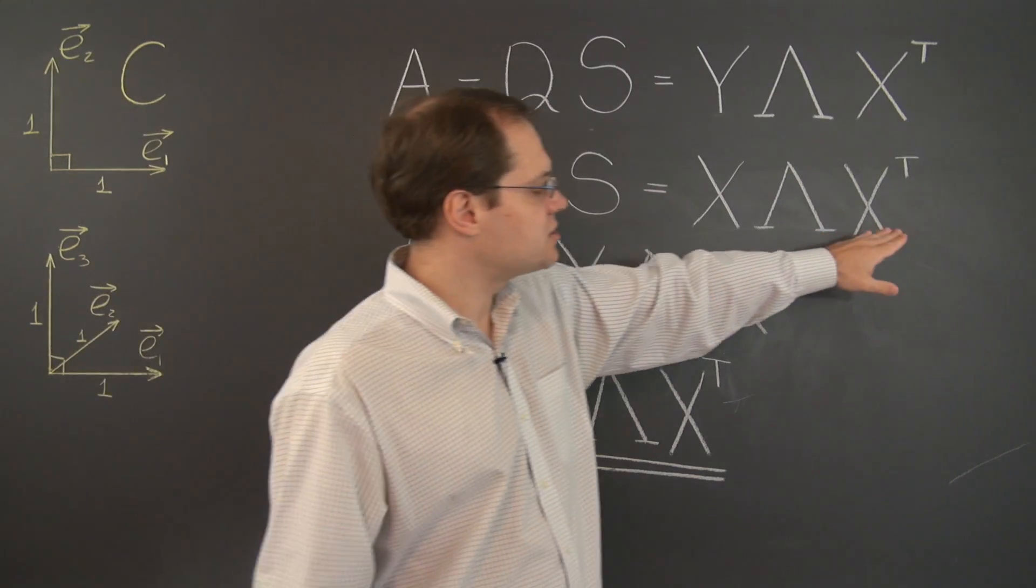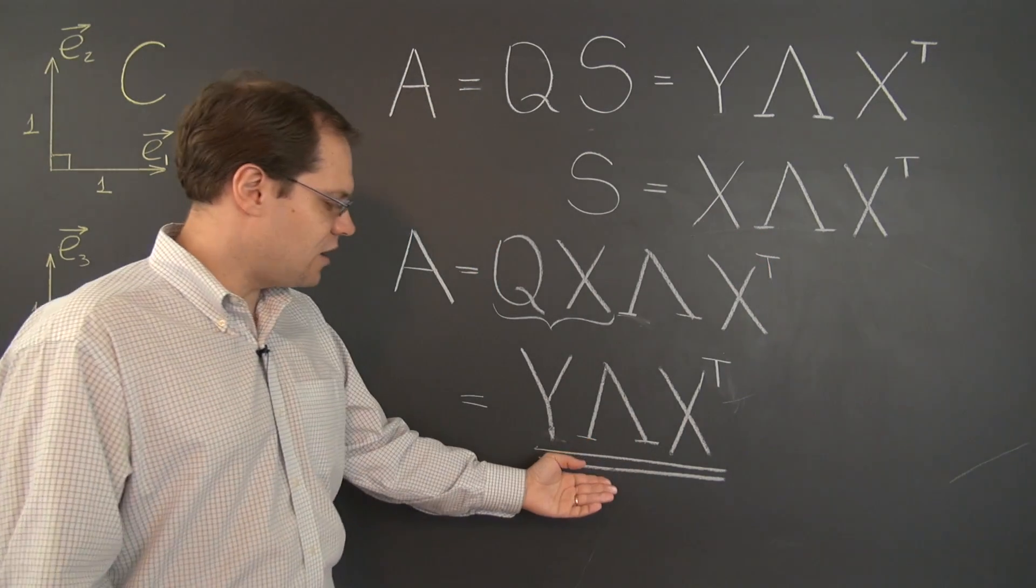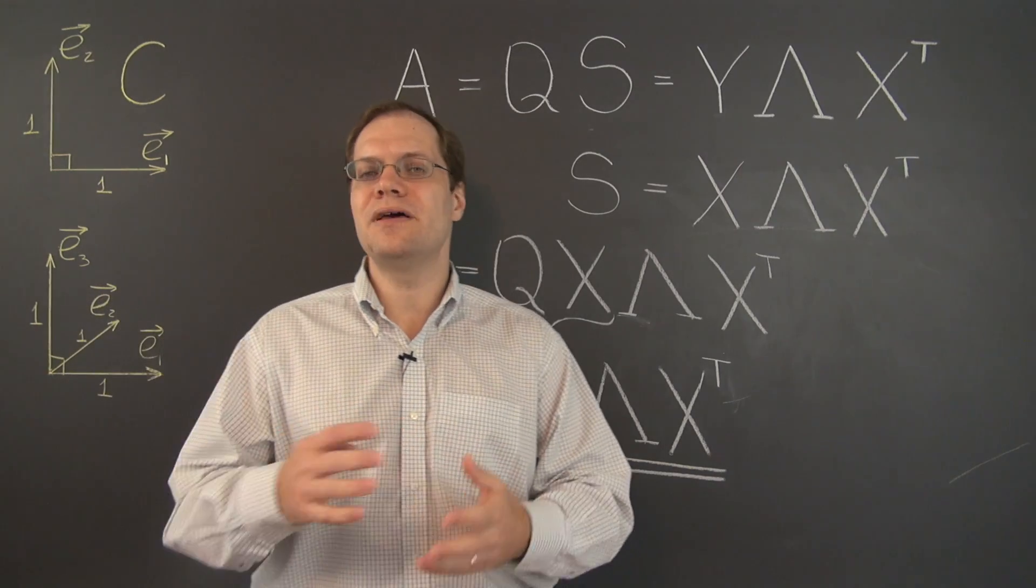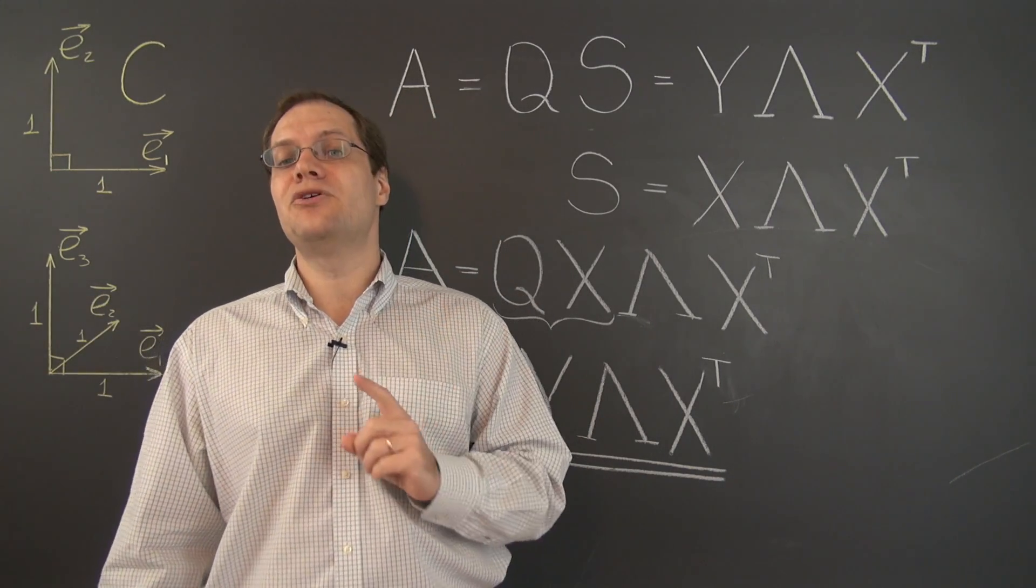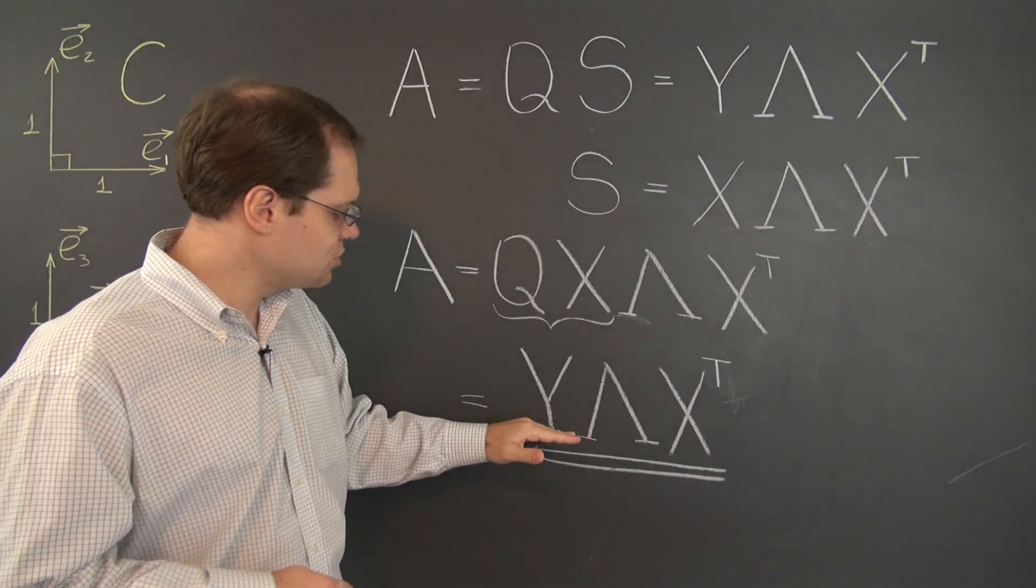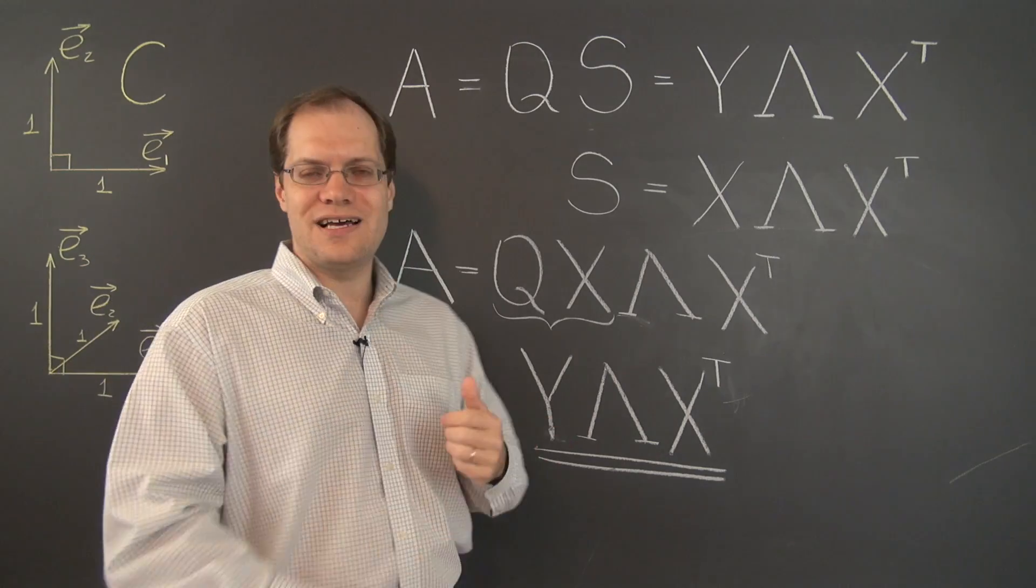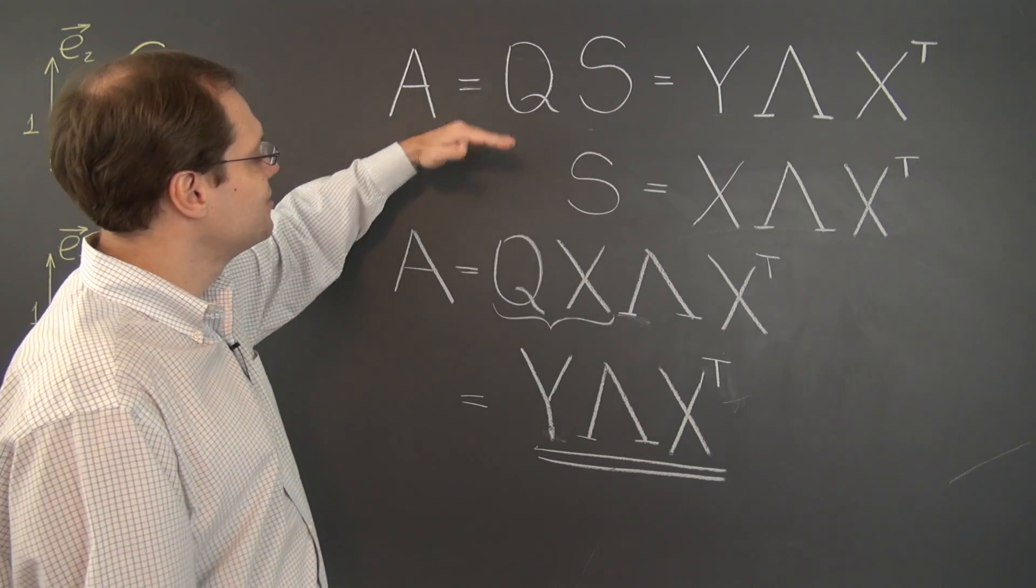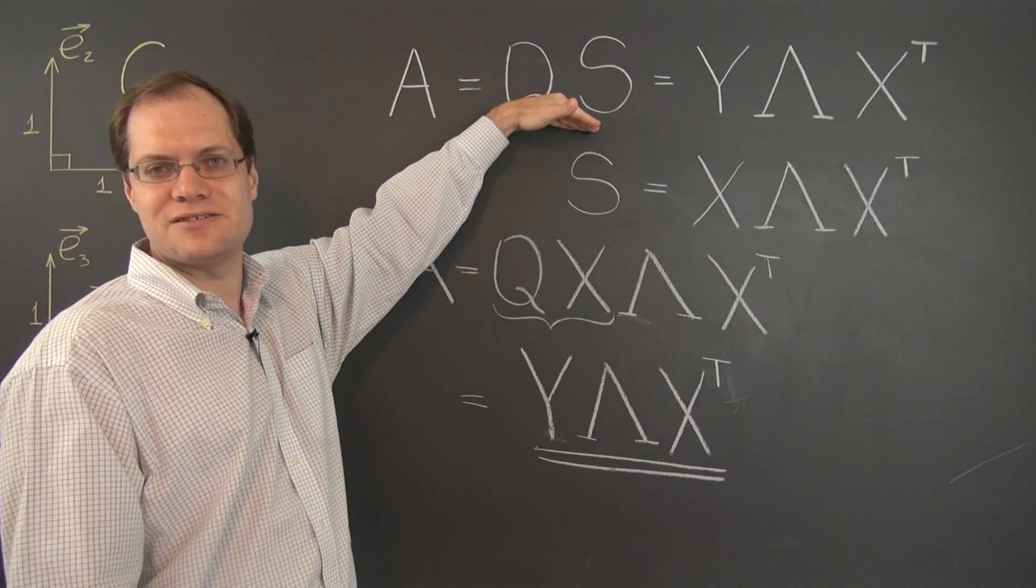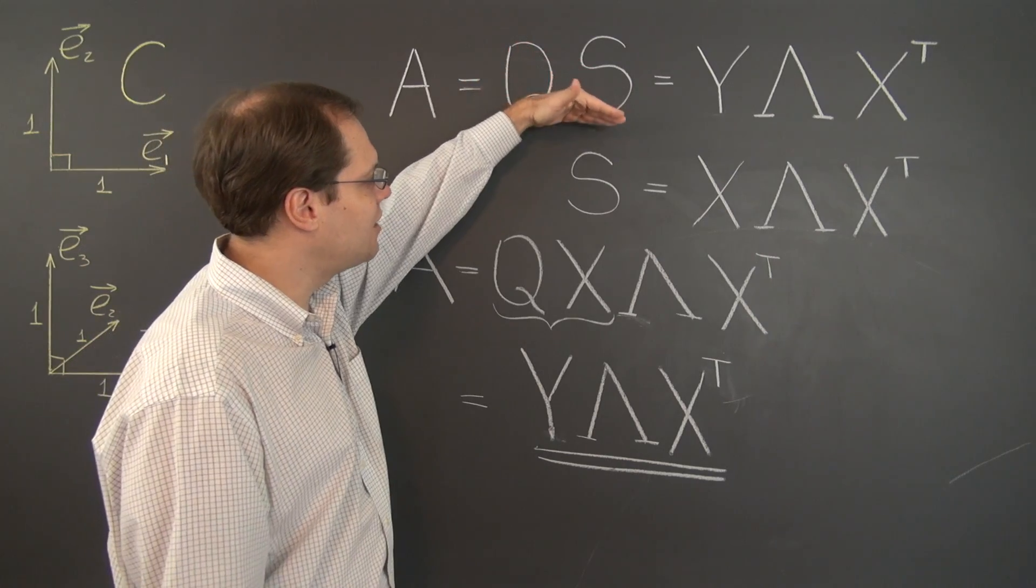So for a symmetric matrix, it was rotate, scale, and then rotate back. For an arbitrary matrix, it's just a little bit different. It's rotate, scale, and then rotate into some other orientation. So that's the only difference. For a symmetric matrix, it's rotate back to where you started, and here rotate to some new configuration. So in that sense, almost any matrix is sort of like a symmetric matrix. Of course, we saw it here, where we interpreted this as any matrix being what a symmetric matrix would do, plus a rotation. So this interpretation is just a derivative of our geometric interpretation of this decomposition.